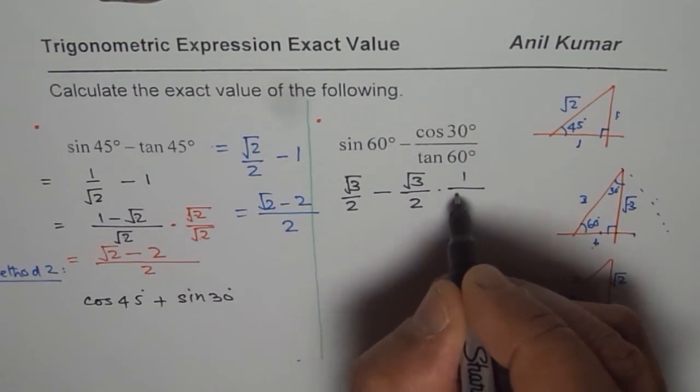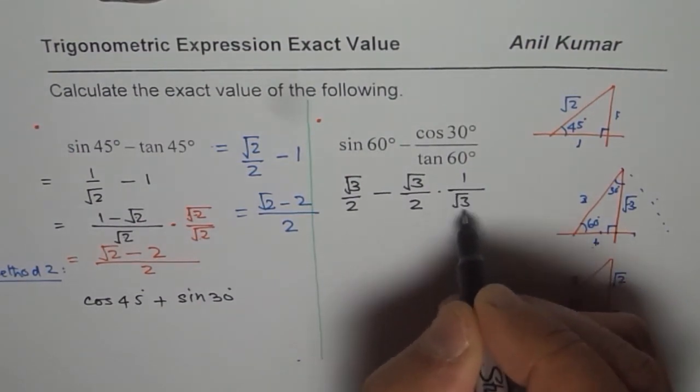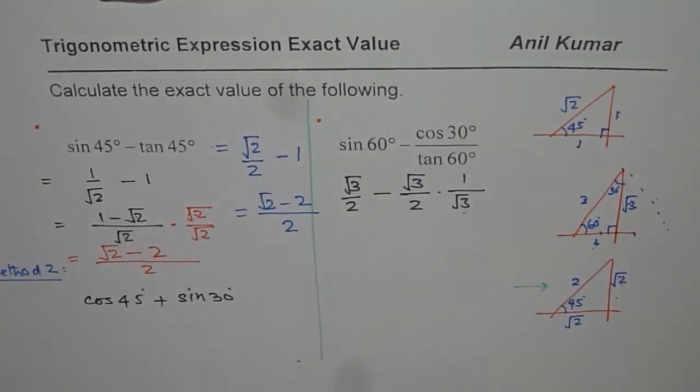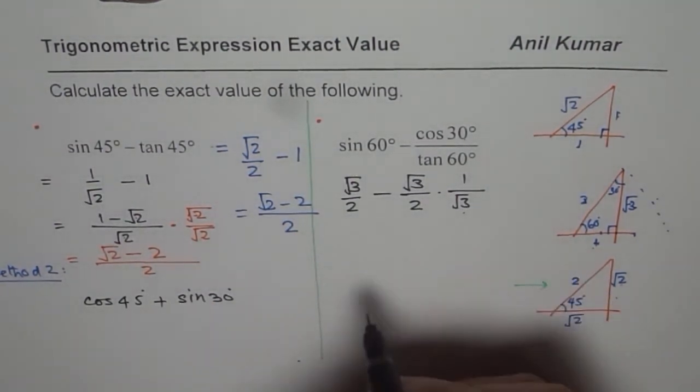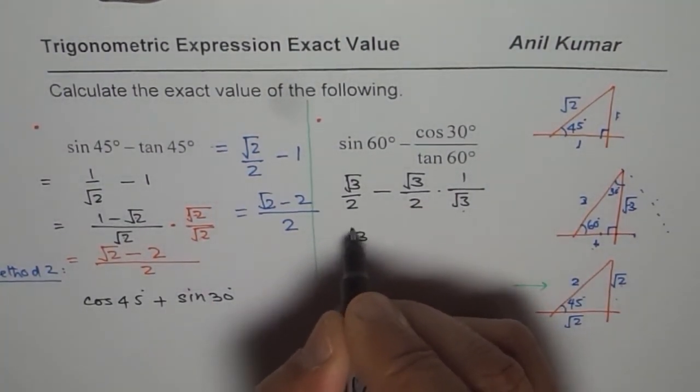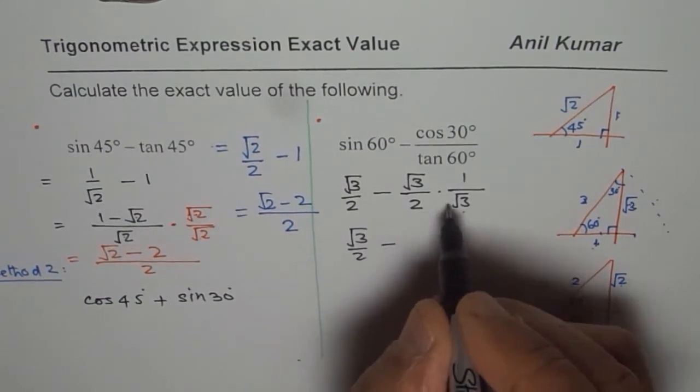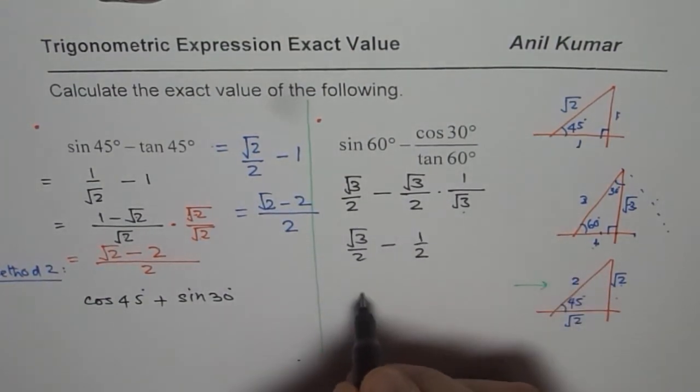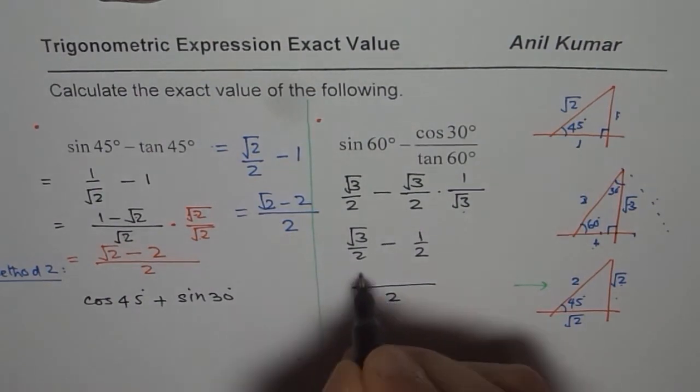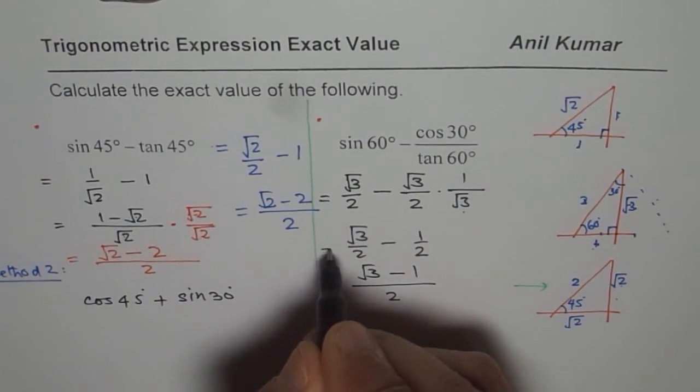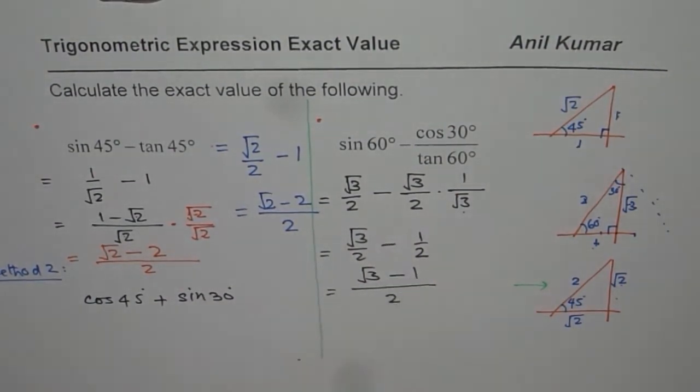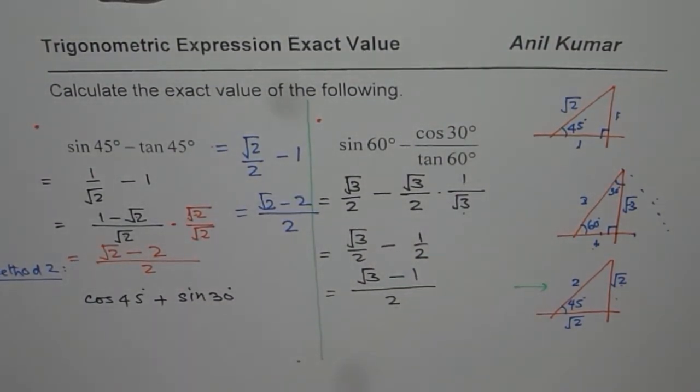So it is kind of, let me write here, square root 3 over 1. I could just write square root 3 here. Perfect. Now in this case, you can see square root 3, square root 3 cancel out. So we have square root 3 over 2 minus 1 over 2. And that gives you the solution as square root 3 minus 1 divided by 2. So the given expression is equal to square root 3 minus 1 divided by 2.